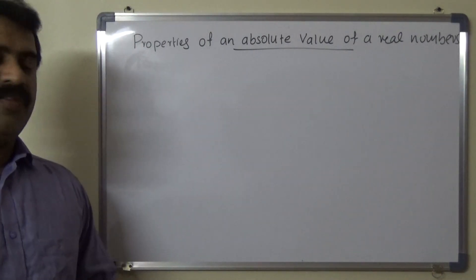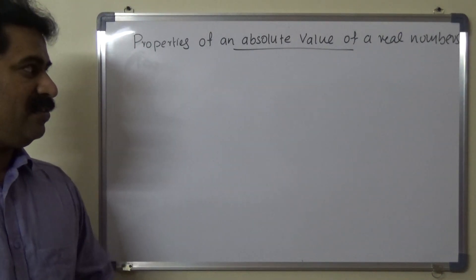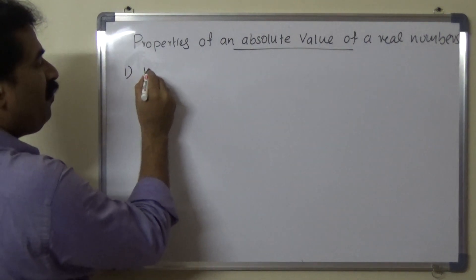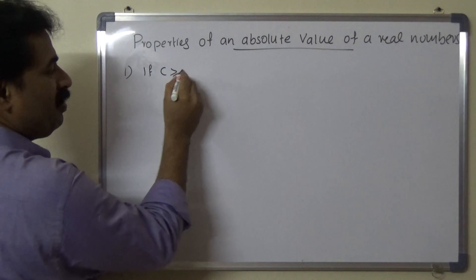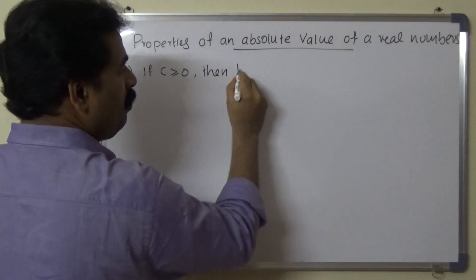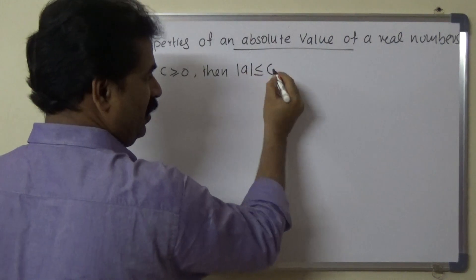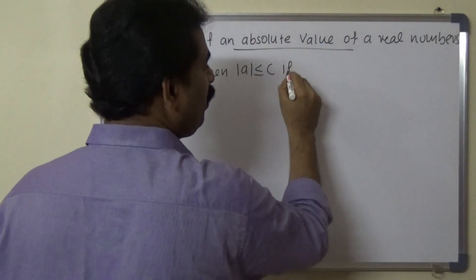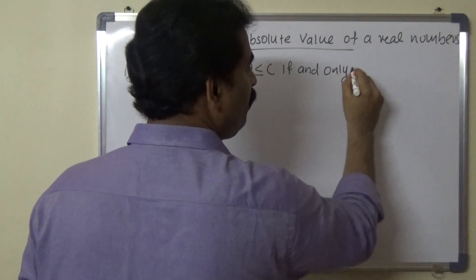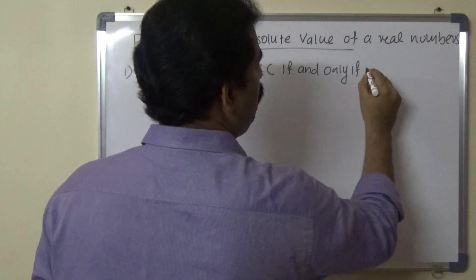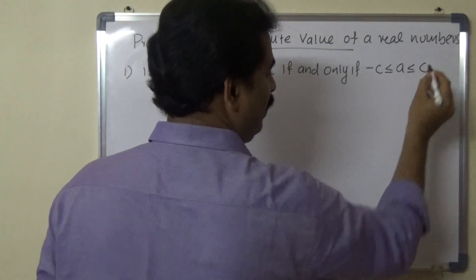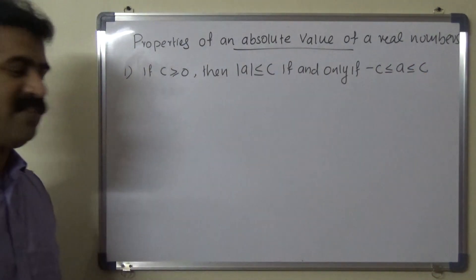Today we will prove two important results. The first is: if c is greater than or equal to 0, then modulus a is less than or equal to c if and only if minus c is less than or equal to a is less than or equal to c. This is the first result.